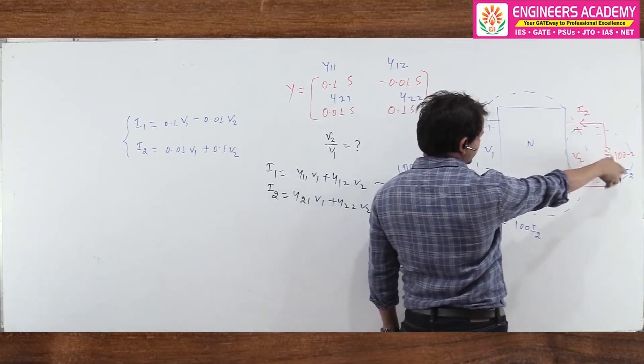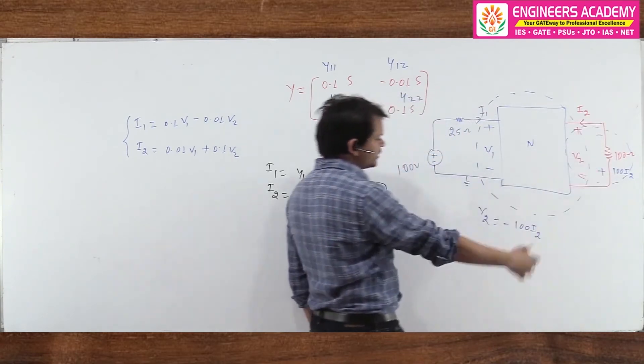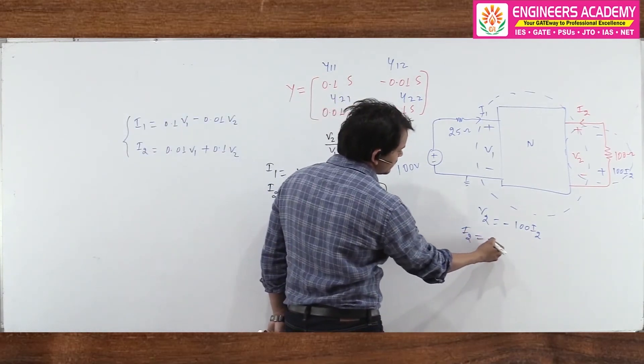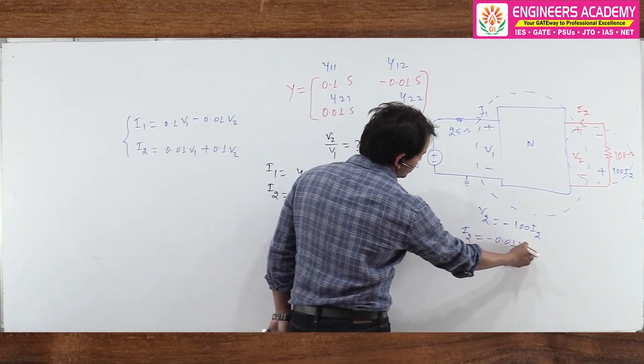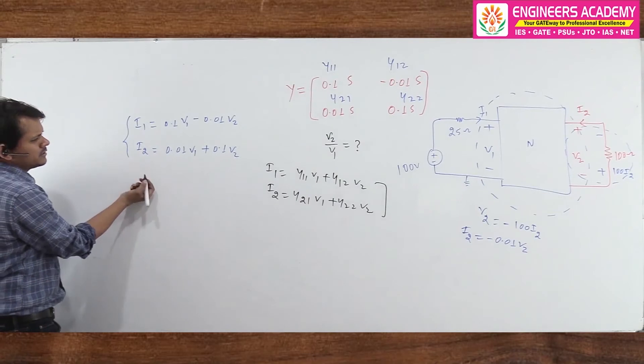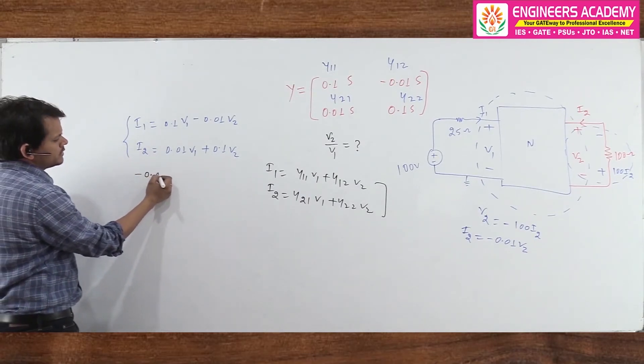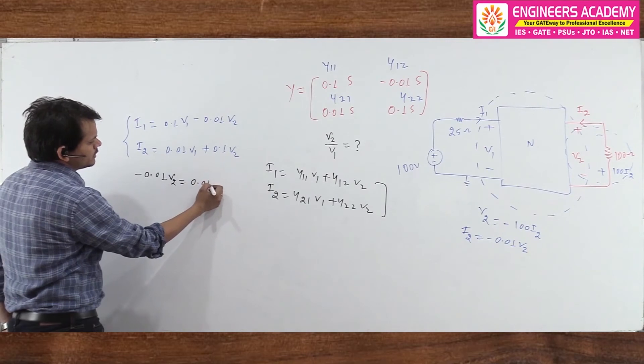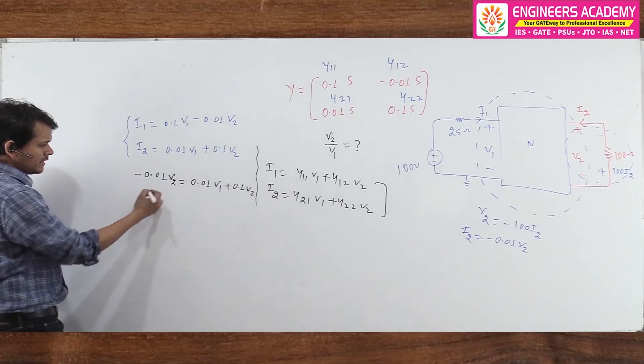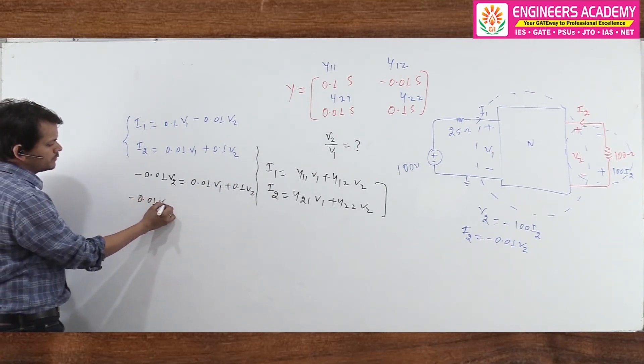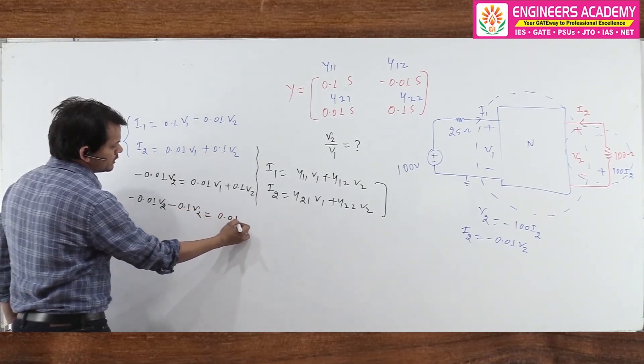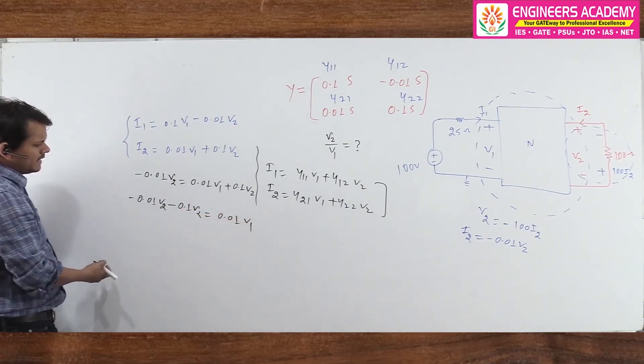Very simple, because of opposite polarity. V2 equals minus 100 times I2. If I say what is I2? I2 is minus 0.01*V2. I2 equals minus 0.01*V2. Now if I just replace here, it should be minus 0.01*V2 equals 0.01*V1 plus 0.1*V2. If I just take here, it should be 0.01*V2 and here minus 0.1*V2 equals 0.01*V1.